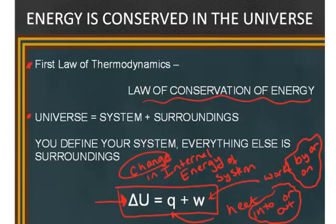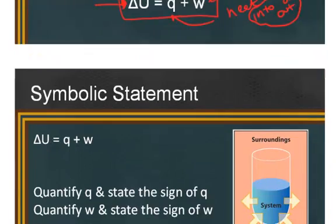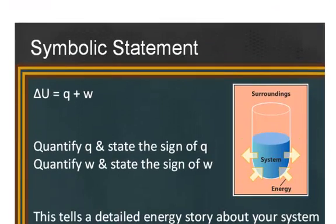So this is a very important little formula that says a lot. It is the mathematical statement of the first law of thermodynamics. So it's a symbolic statement, delta U equals Q plus W. But we want to really conceptually understand what this means.